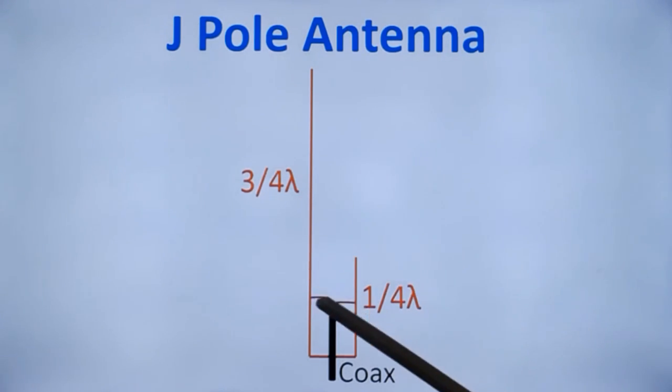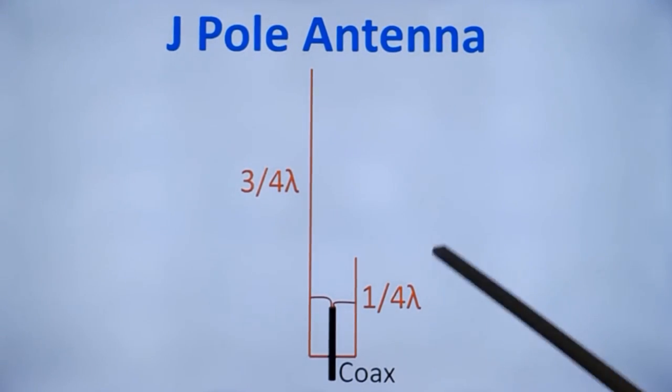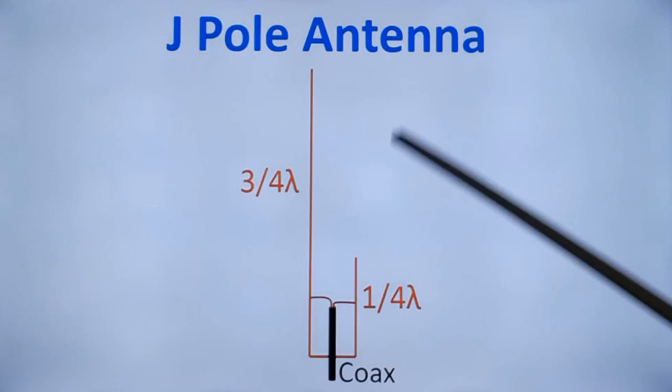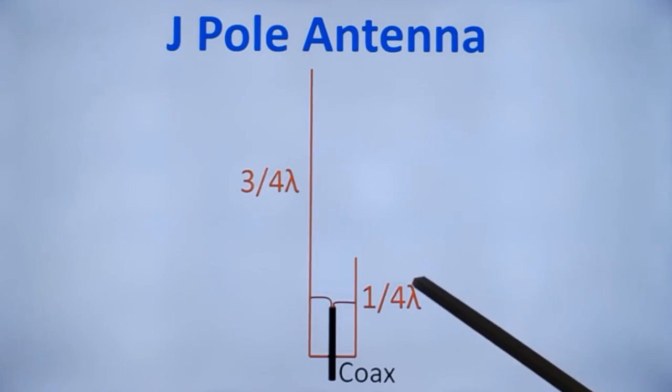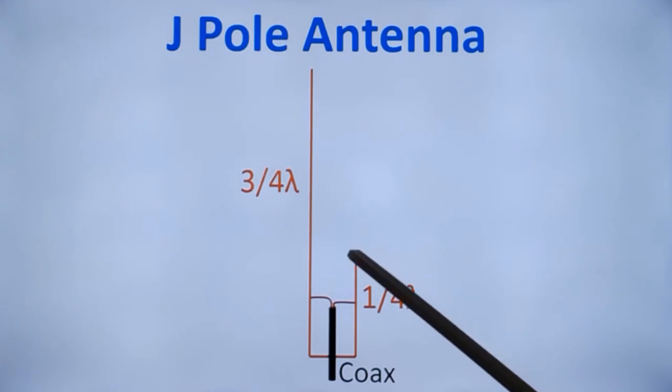And J pole antenna has a little higher gain in the direction of the quarter wave matching stub. And this antenna has been used for terrestrial communication through repeaters and simplex operations as well as for satellite communications.